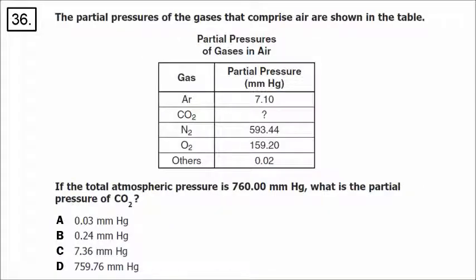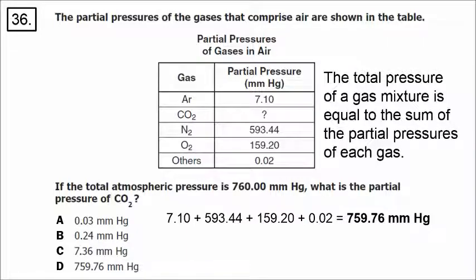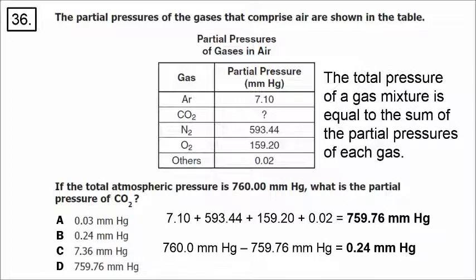Number 36 is basically a math question. The total pressure of all gases equals the sum of the individual partial pressures of each gas. We don't know the partial pressure of CO2, but the total pressure is 760. Adding up the pressures in the table gives 759.76 millimeters of mercury. Subtracting that from 760 gives the partial pressure of CO2, which is B, 0.24 millimeters of mercury.